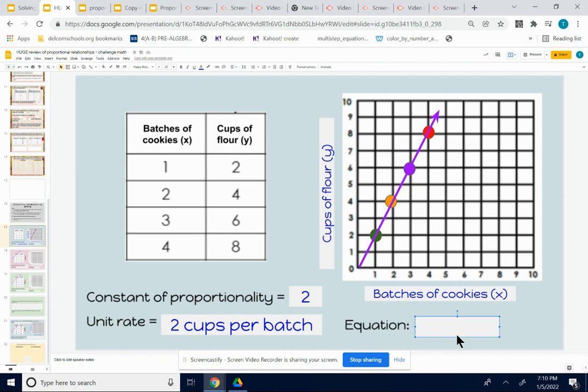The equation. The equation is we want to write it in the form y equals something x. There's a relationship here. The y value, cups of flour, is always equal to some number times x, which is the batches of cookies.